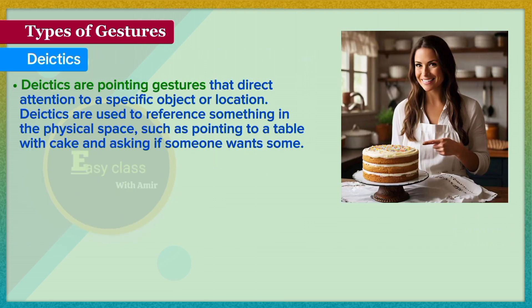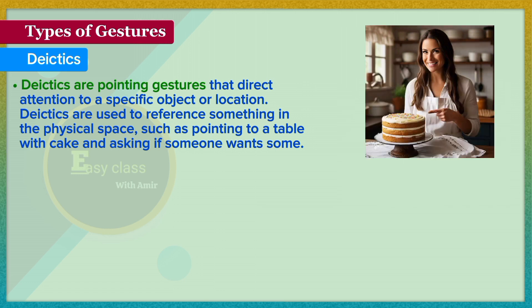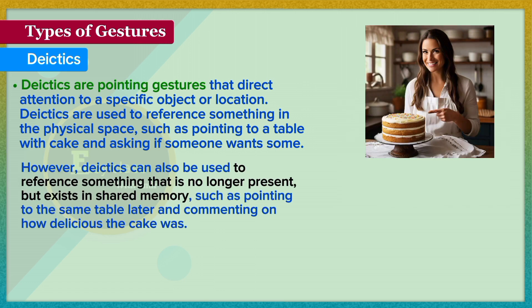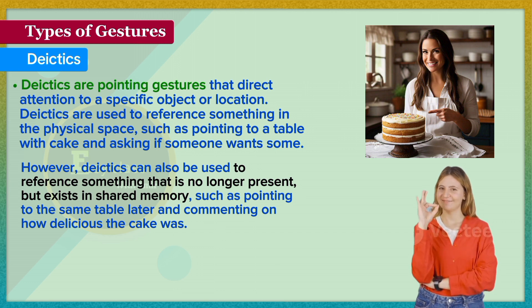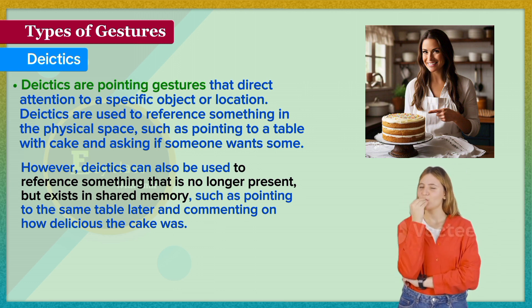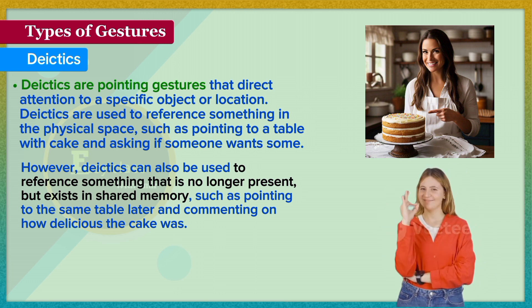Dyktics are pointing gestures that direct attention to a specific object or location. They are used to reference something in the physical space, such as pointing to a table with cake and asking if someone wants some. However, dyktics can also reference something no longer present but existing in shared memory, such as pointing to the same table later and commenting on how delicious the cake was.